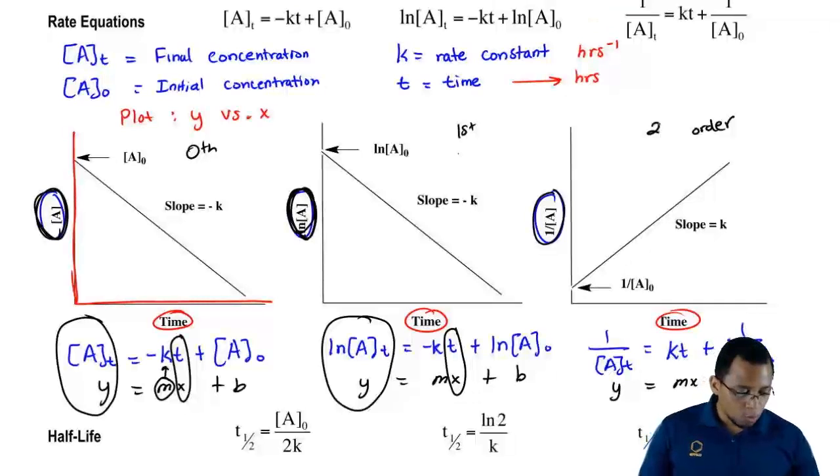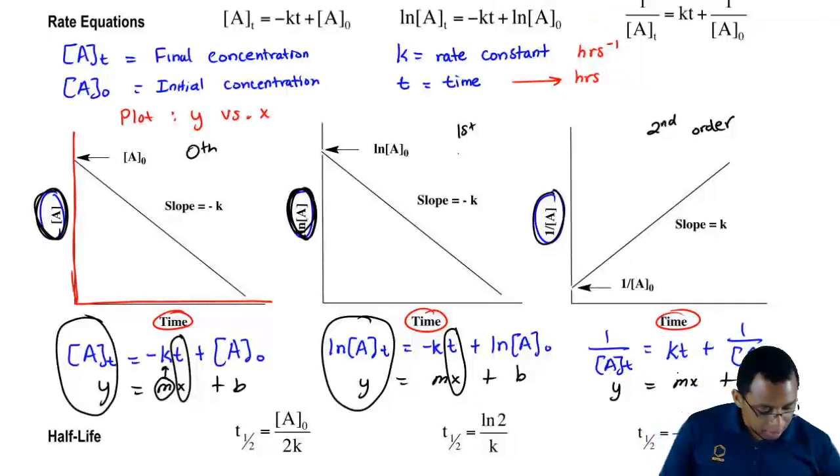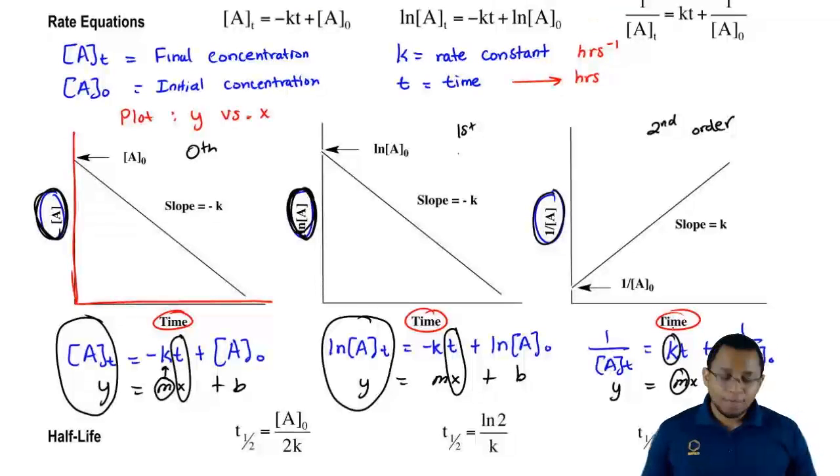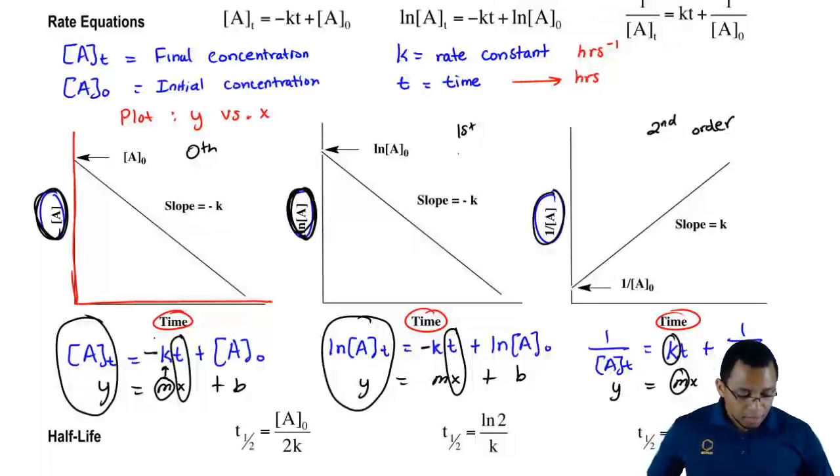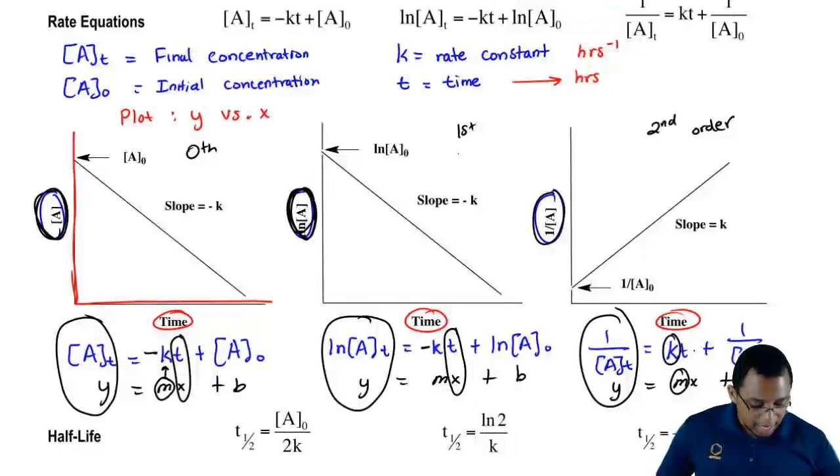Then finally, for second order, one thing you should realize first is that second order is the only one with a positive slope. Why is it the only one with a positive slope? Because here, M is a positive K. For zeroth and first order, K was negative. It's negative here and it's negative here, which means the slopes are decreasing over time. Here, Y is 1 over A and of course, time again is on the X axis.